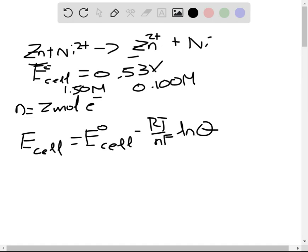And Q is the reaction quotient, which would be the concentration of species that change in solution. So that would be the concentration of zinc divided by the concentration of nickel. And we can use this information to determine our E cell.